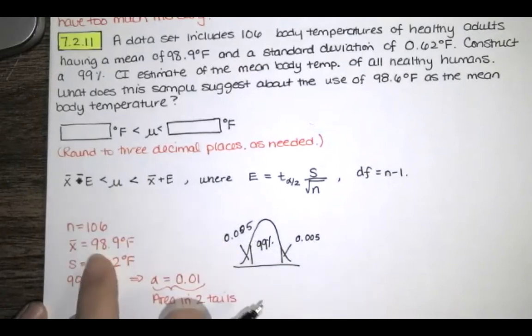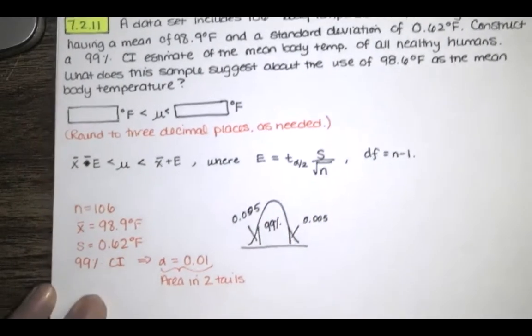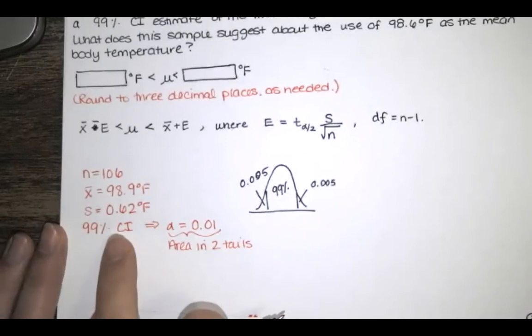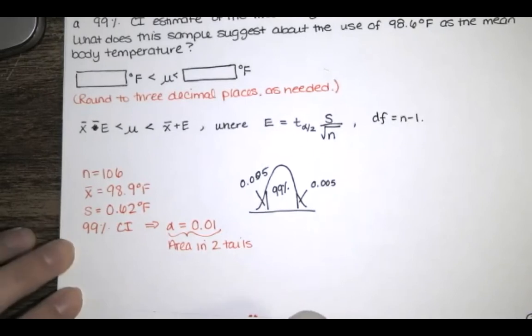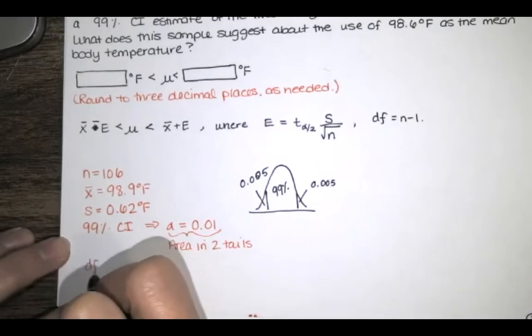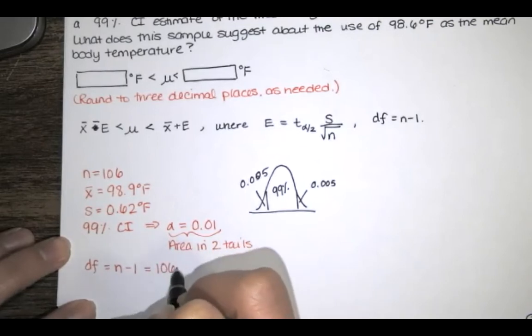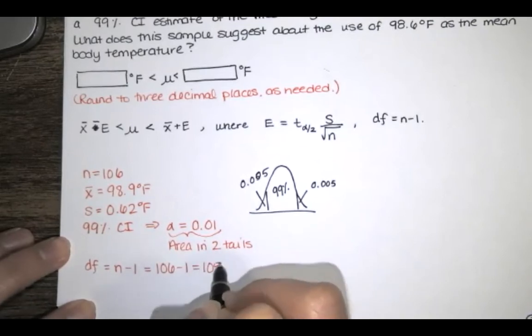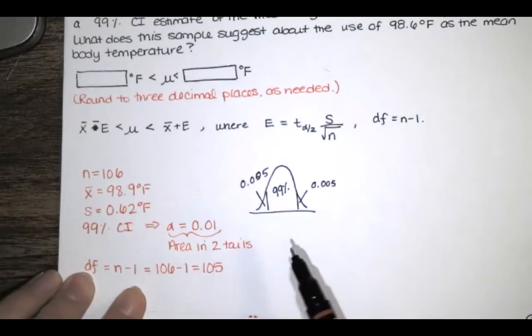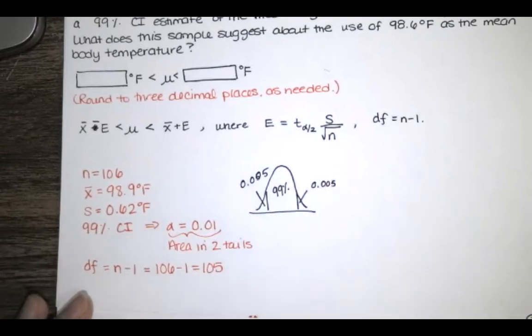We've got x̄, S, and n. The only thing we need to do now is find the critical T value. To find it, we need α, the area in two tails, and degrees of freedom. The degrees of freedom are one less than the sample size, so that's 106 minus 1, which is 105. With these two pieces of information, we can find t sub α/2.